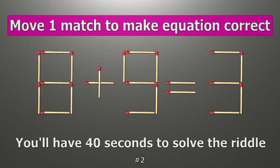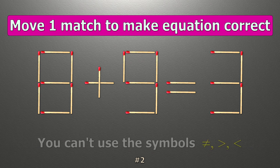We have the equality 8 plus 9 equals 3. Our equality is wrong. We need to move one match to make our equality correct.